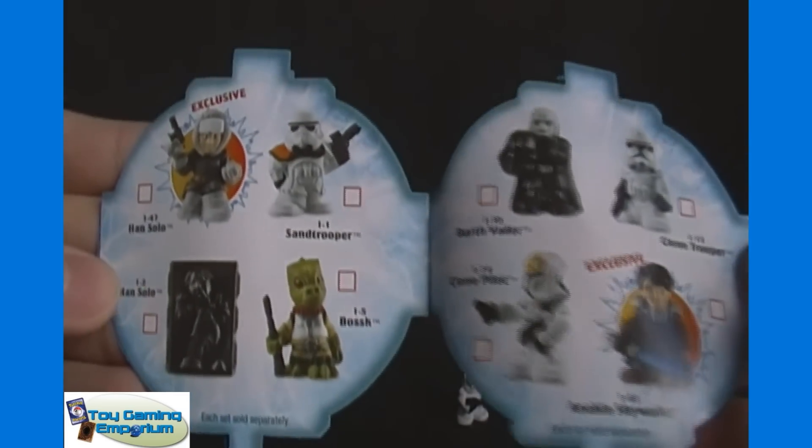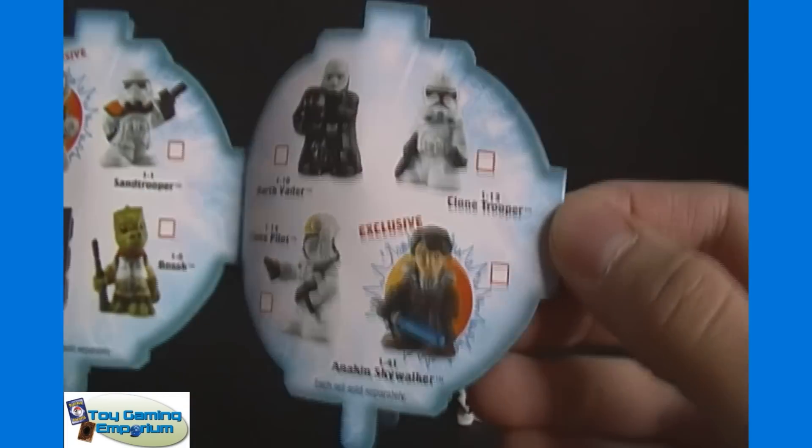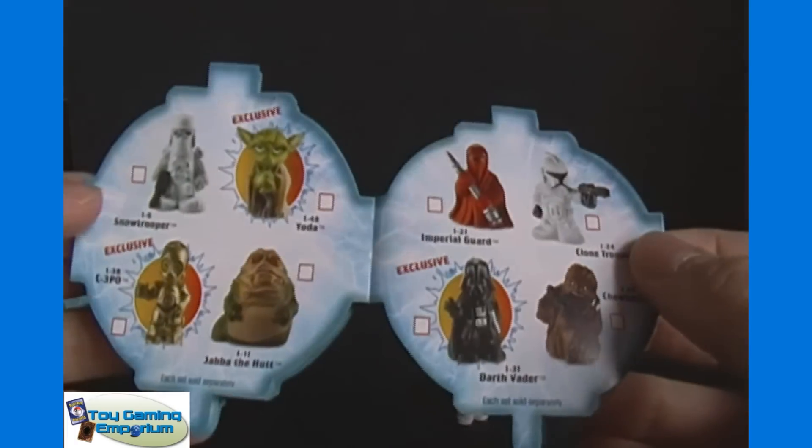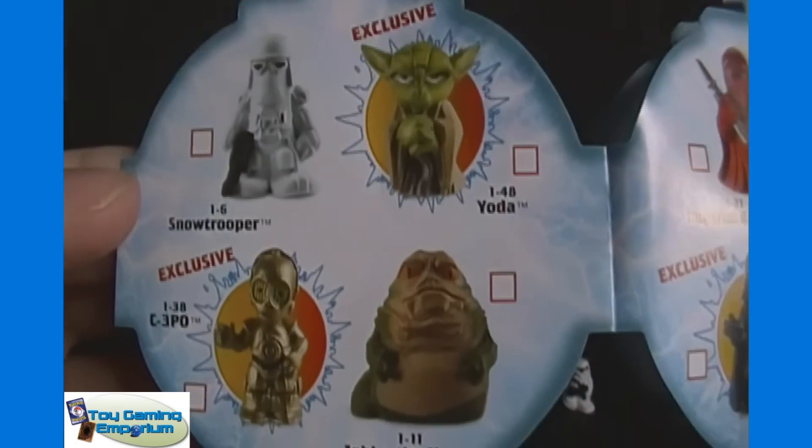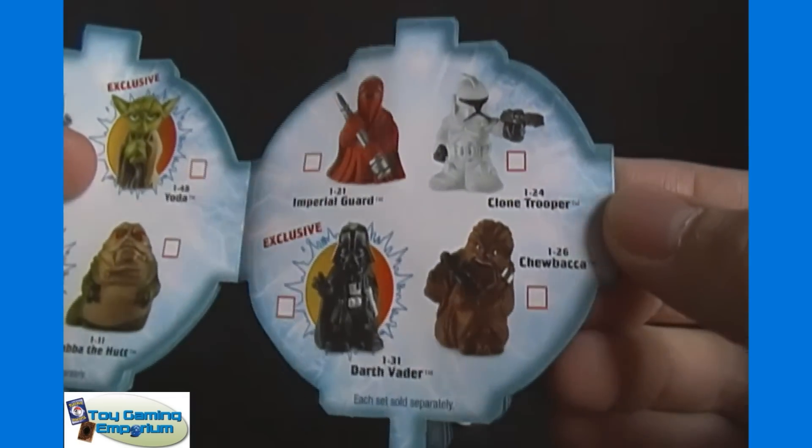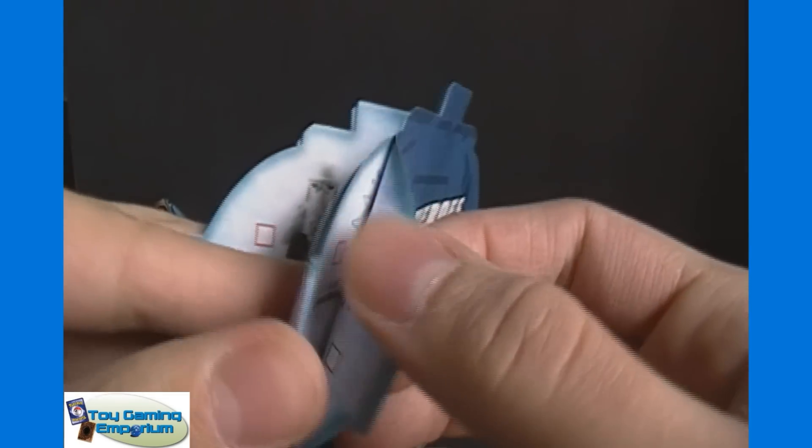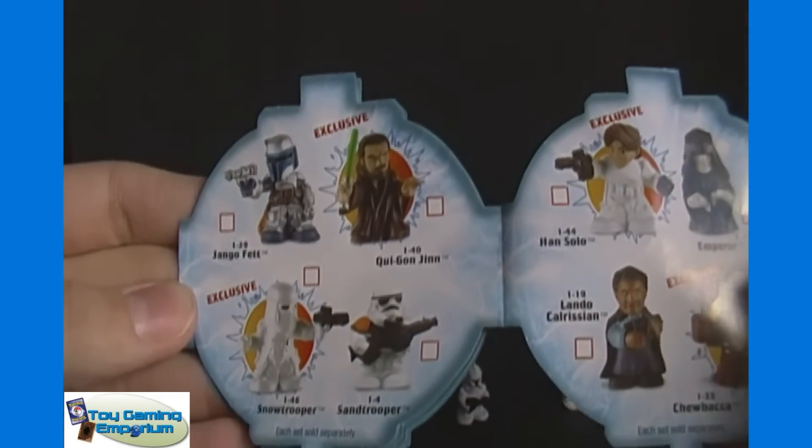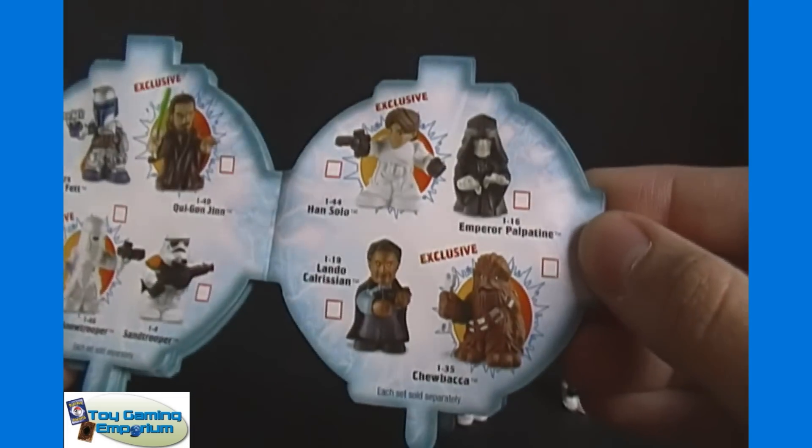I got Han Solo in Carbonite there. Anakin Skywalker exclusive. There's a cool looking Yoda exclusive and a C-3PO. These will be some cool ones to get. Exclusive Darth Vader. That should mean kind of how many different exclusives there are. But it's not like a good number. There's a Snow Trooper. Another couple of exclusives there. Chewbacca.